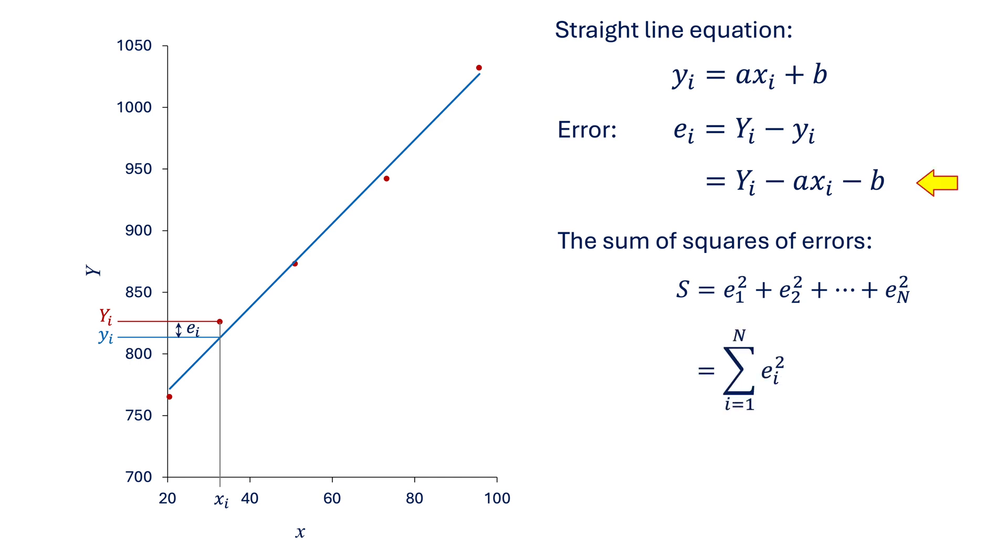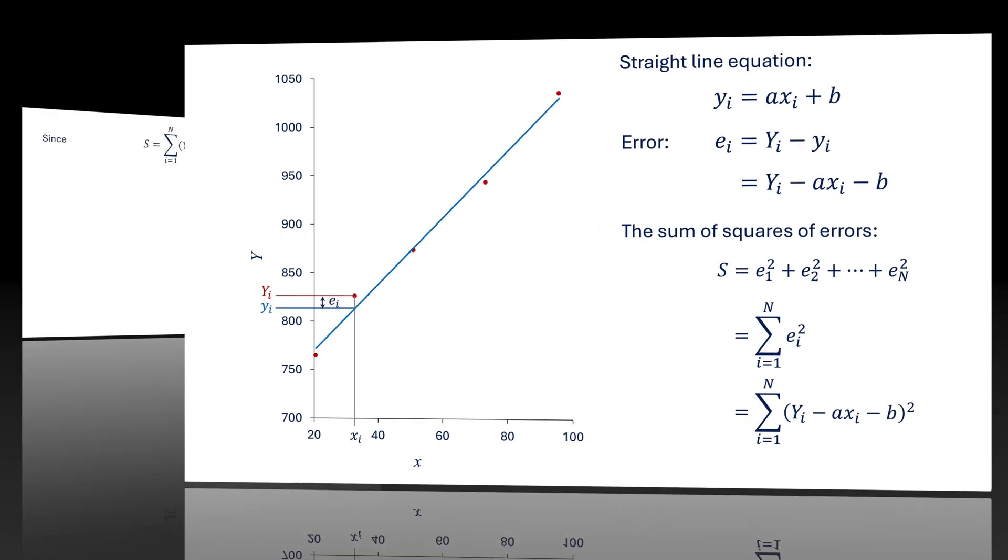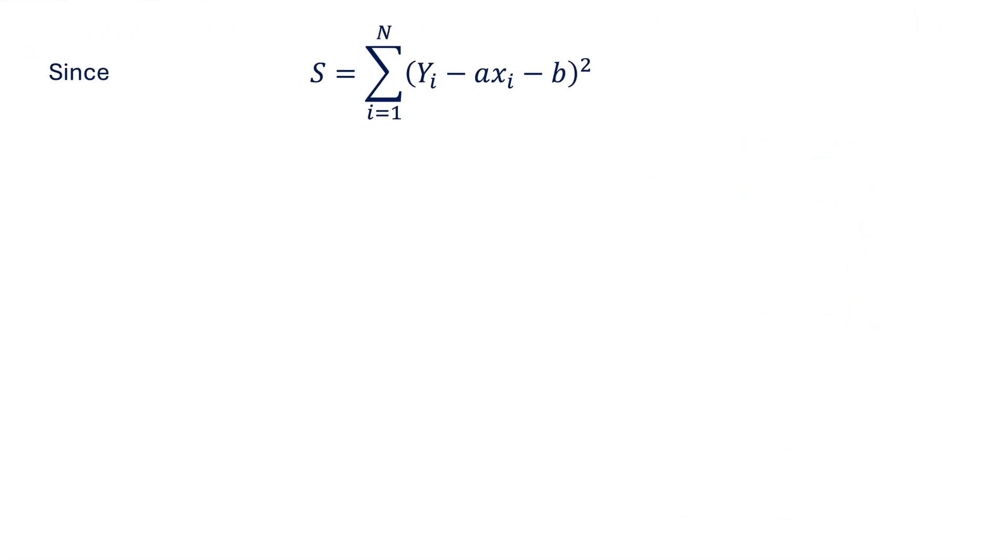By substituting the equation above, we get the summation in terms of the given data and the straight line properties a and b. It's important to note here that in the common steps, we will deal with a and b as variables, not constants, because they are the unknowns of this particular problem.